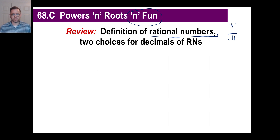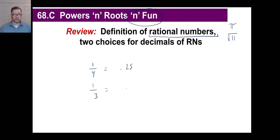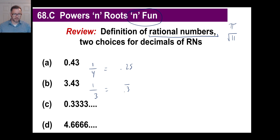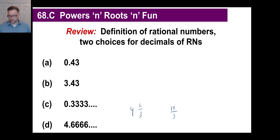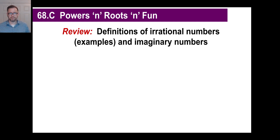For a rational number, you either get a terminating decimal — like one-fourth, which is 0.25 — or a repeating decimal — like one-third, which is 0.333... going on forever. Those are the only two choices. For example, 0.43 terminates (43 hundredths), 3.43 terminates, and 4.666... repeats (that's 4 and two-thirds, or 14/3 as an improper fraction). Irrational numbers can't be written as fractions.